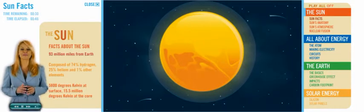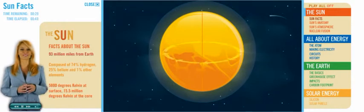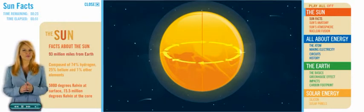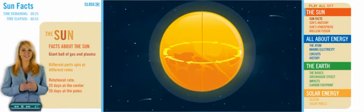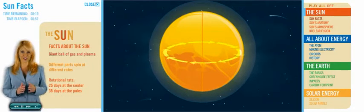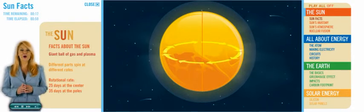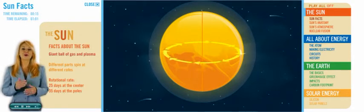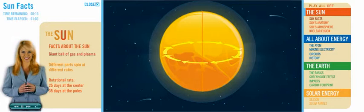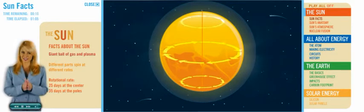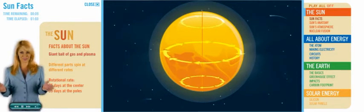Just like a planet rotates on an axis, so does the Sun. But unlike solid spinning objects, the entire Sun doesn't rotate at the same speed. Because the Sun is not solid, but is instead a giant ball of gas and plasma, different parts of the Sun spin at different rates. The rotational period is 25 days at the center and 35 days at the poles.